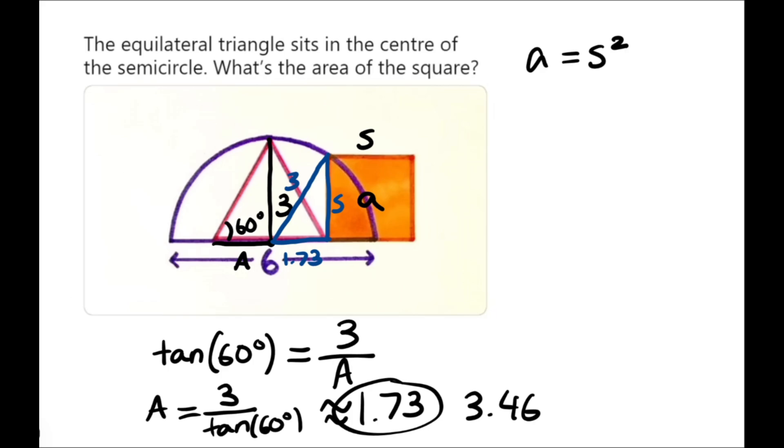So, we know that the two side lengths, S and 1.73, squared, are going to equal the hypotenuse squared, which is 3. So, remember, A squared plus B squared is equal to C squared.